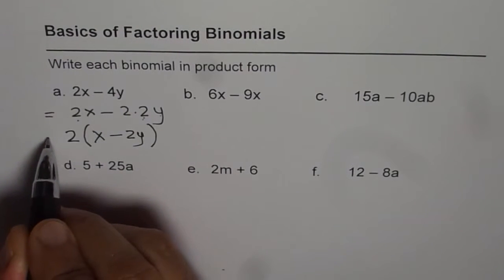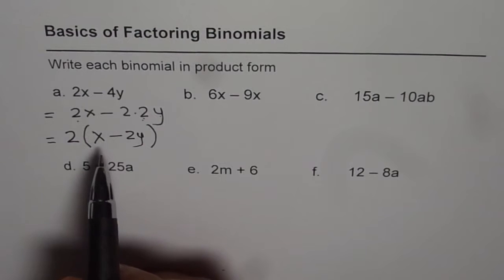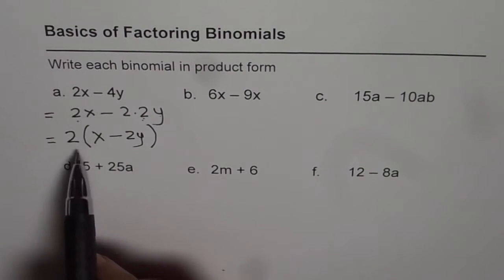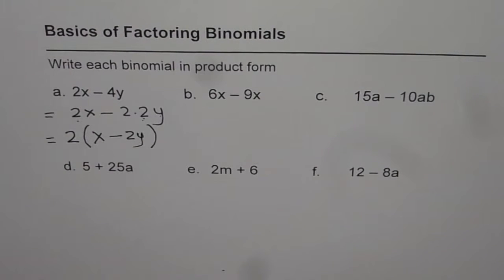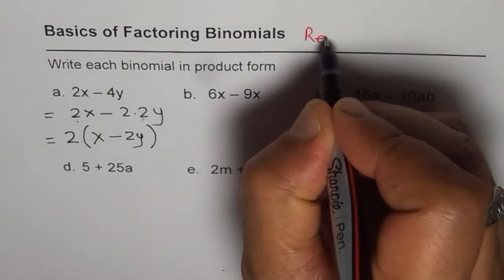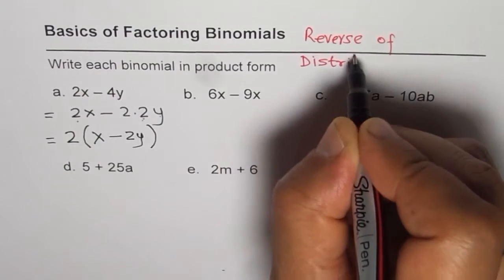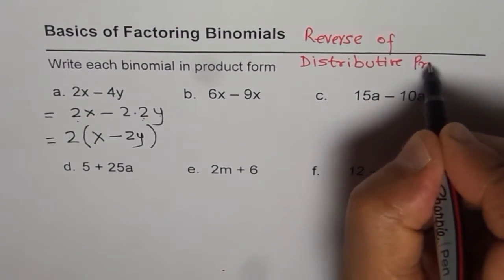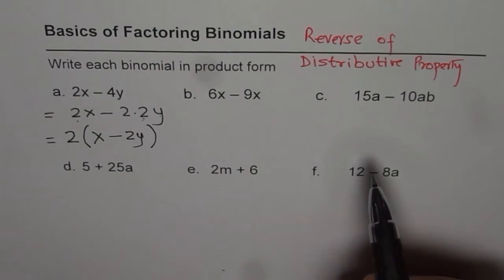So we get 2 times (x minus 2y). You can always check your answer — the product of 2 times (x minus 2y) should give you the original binomial. 2 times x is 2x and 2 times minus 2y is minus 4y, so that is correct. This is the reverse of the distributive property, and that is what you have to think about while solving this kind of question.